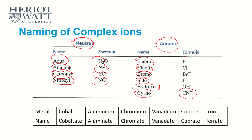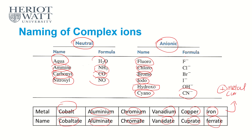Now let's look at the metal names. We have two different names here. We have cobalt and cobaltate, aluminum and aluminate, chromium and chromate, vanadium and vanadate, copper and cuprate, iron and ferrate. The first column is for positive metal complexes, and the second column — ending in -ATE — is for negative metal complexes.